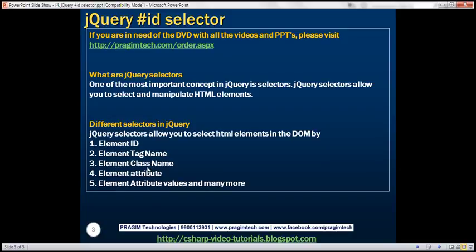jQuery selectors allow you to select HTML elements in the DOM by element id, element tag name, element class name, element attribute, element attribute values, and many more. In our upcoming videos, we'll discuss these different selectors one by one in detail.